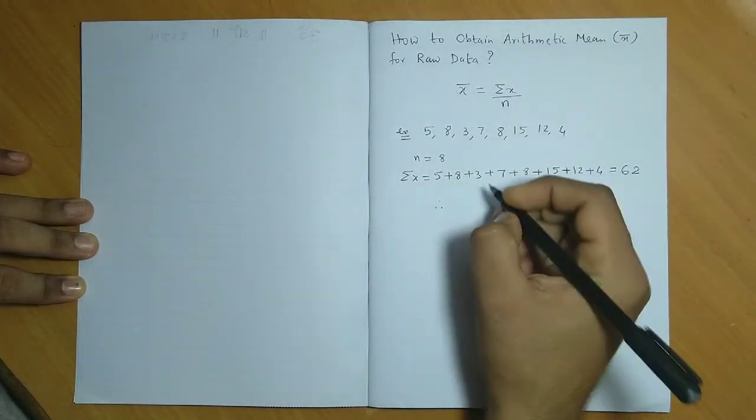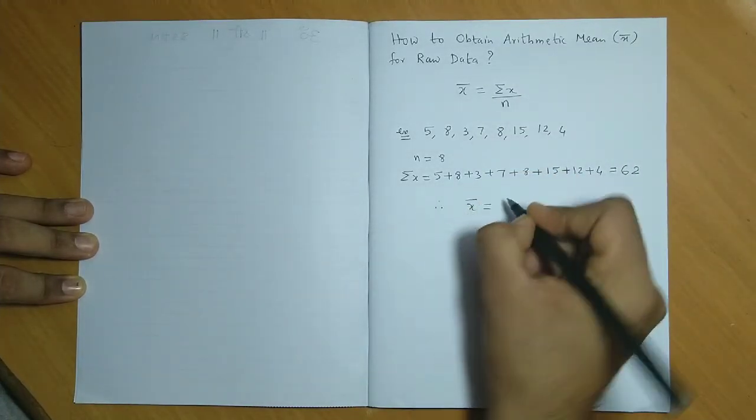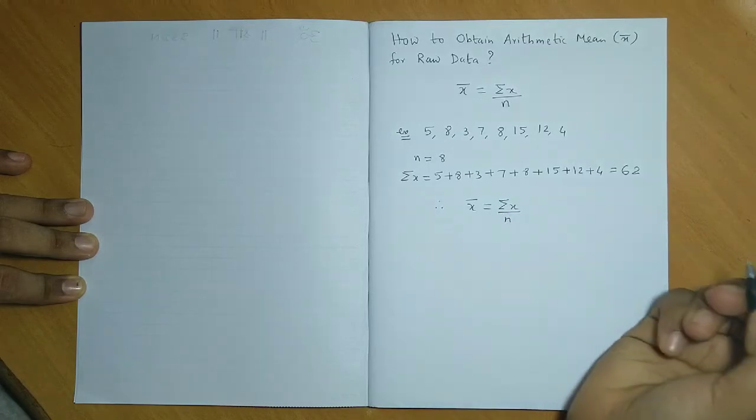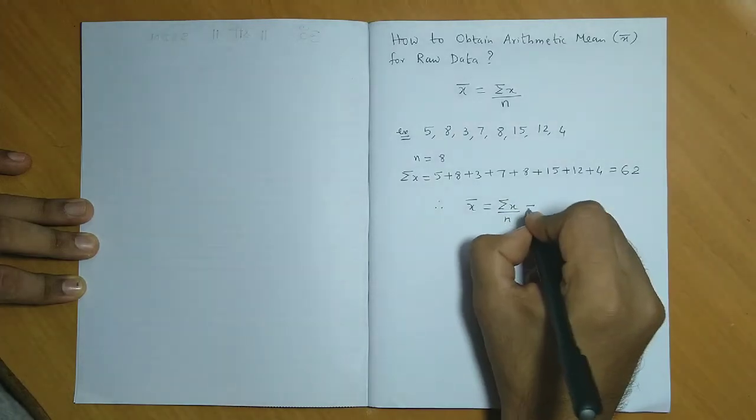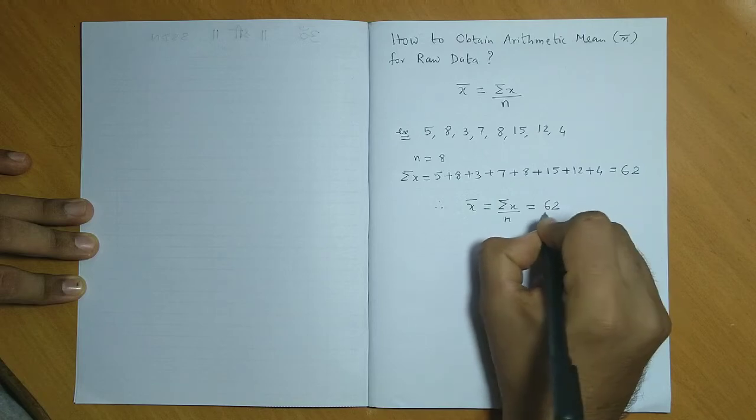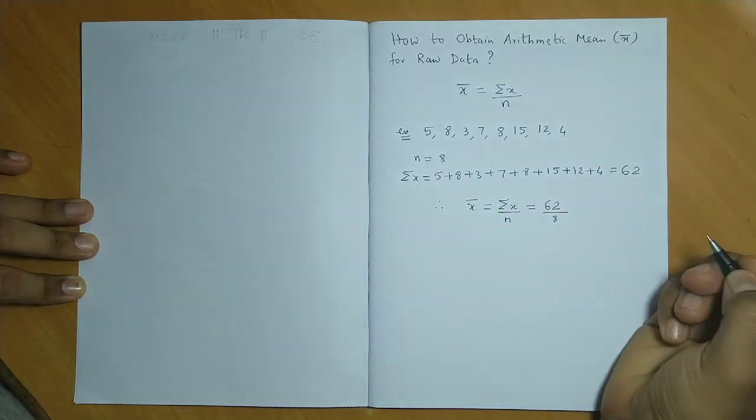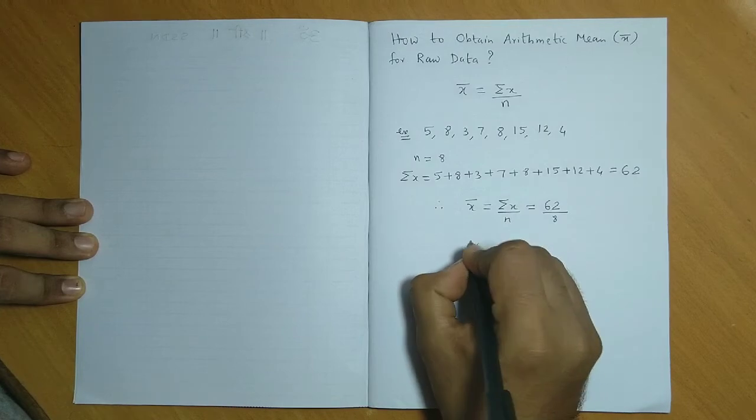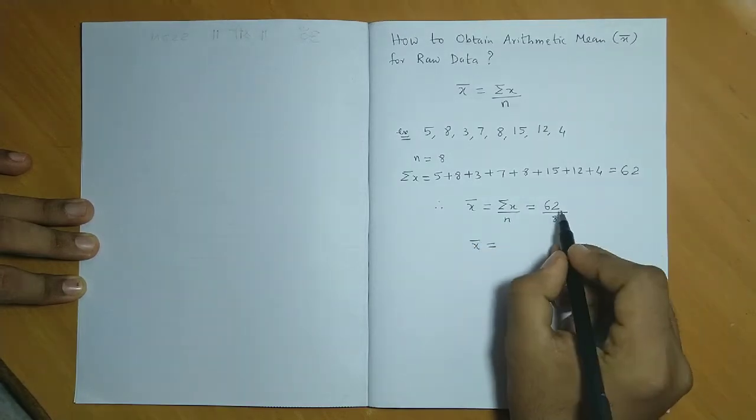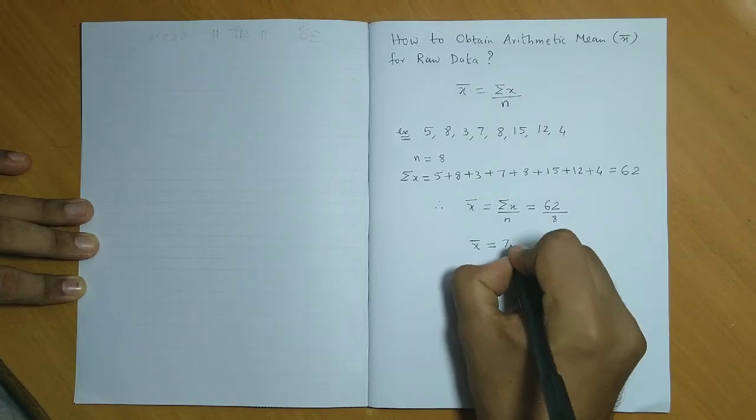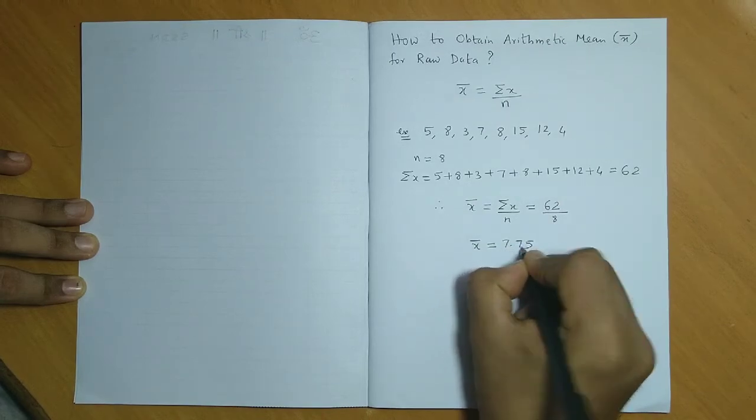So now we could easily obtain x bar using the formula, summation x divided by n. If we substitute this total here, 62 divided by n, that is the number of observations, we get x equals... now if we divide 62 by 8, that comes to 7.75.